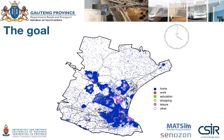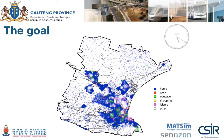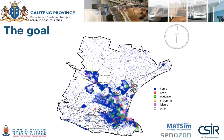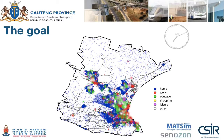You now see that it's 4 o'clock in the morning, and there is some activity going on in Nelson Mandela Bay. From about 6 onwards, you see a lot more work activities. And around 7, half past 7, when schools start, you see a huge amount of green activities.